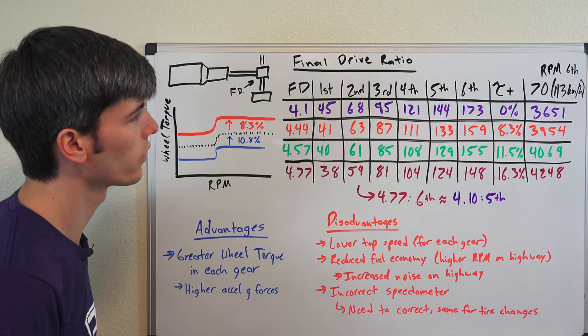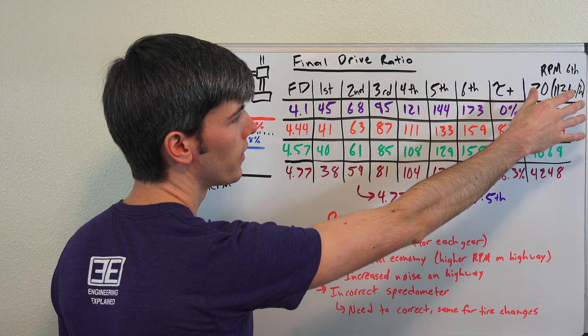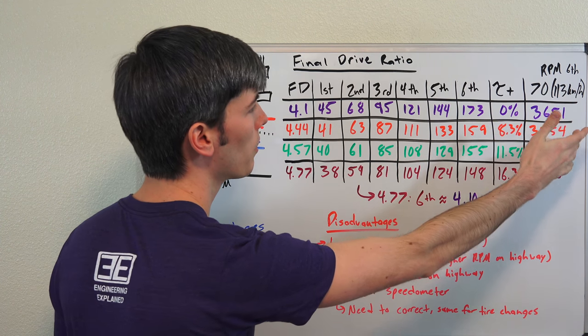But there are of course downsides to doing this. So here I've got the RPM. What RPM will be at in sixth gear at 70 miles per hour or 113 kilometers per hour.